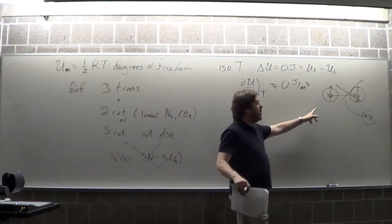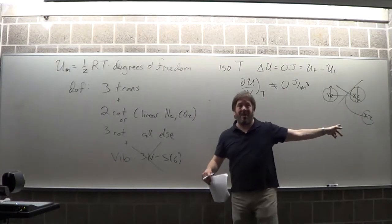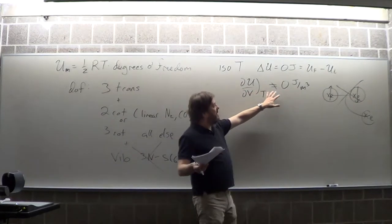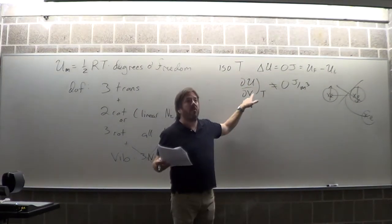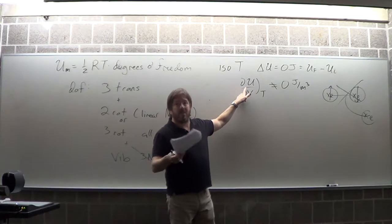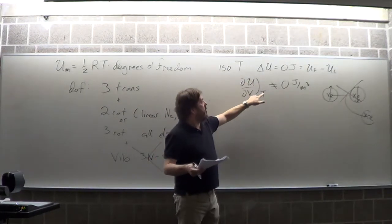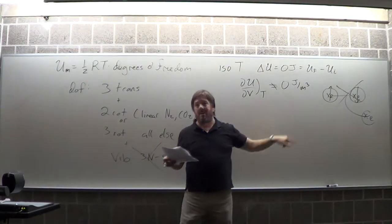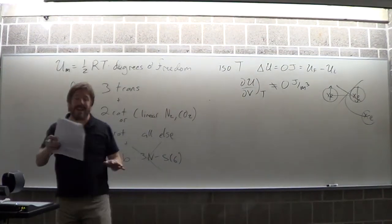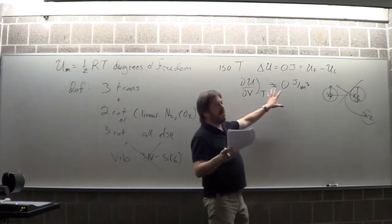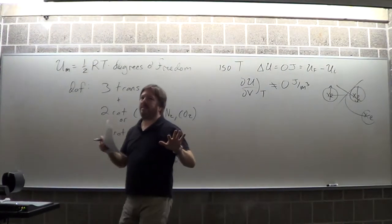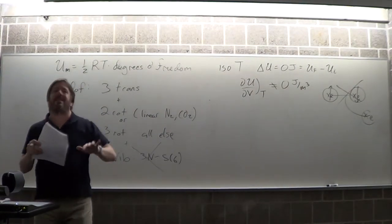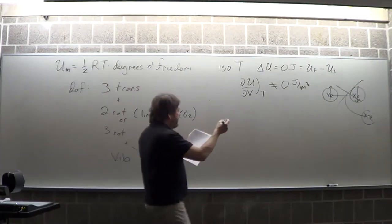This describes a Van der Waals A-type interaction, which is the source of non-ideality. After the first test, you'll do a thermodynamic proof using entropy, and when you use PV = nRT you'll get zero, but with Van der Waals you won't. That's on the second test. For now, we'll stick with the simplified description.